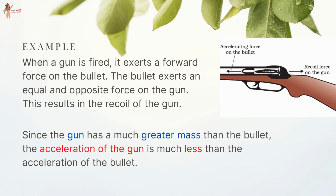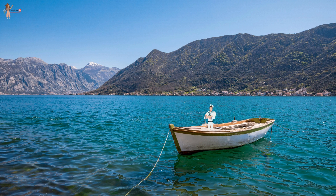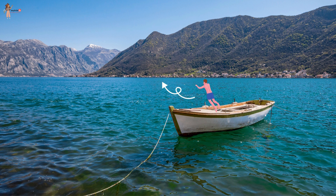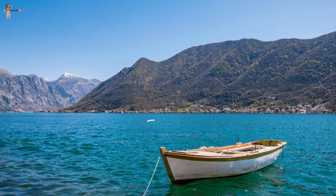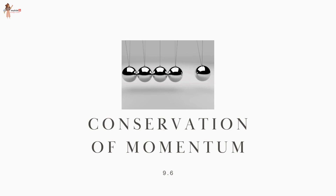Since the gun has a much greater mass than the bullet, the acceleration of the gun is much less than that of the bullet. The Third Law can also be illustrated when a sailor jumps out of a rowing boat — as the sailor jumps forward, the force on the boat makes it move backwards.